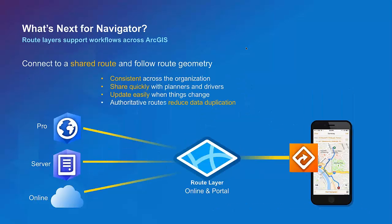What's coming next for Navigator? We're focused on how you can pre-plan a route using ArcGIS Pro, the viewing capability inside of ArcGIS Server, ArcGIS Online, or the Web App Builder — save that as a route layer inside of ArcGIS Online or Portal, and then share it to Navigator so that the device is always following along a well-defined pre-planned route rather than determining a route within the Navigator application itself.